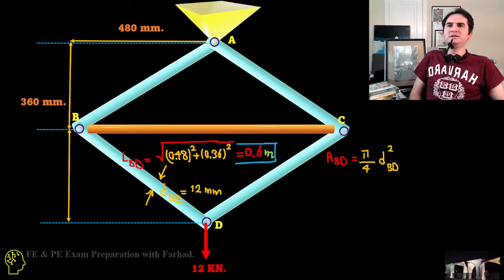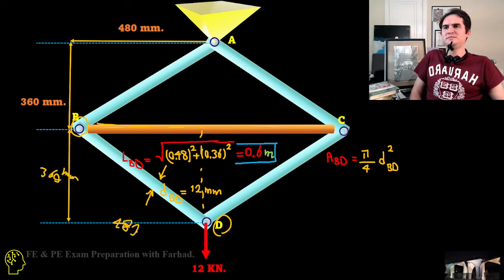Length of BD. It's also symmetry. That's 360 millimeters. This is 480. So that's 0.48 meters squared plus 0.36 meters squared, and it just gives us 0.6 meters or 600 millimeters.